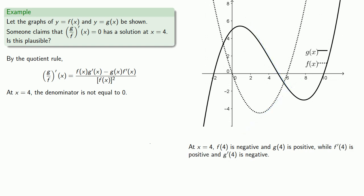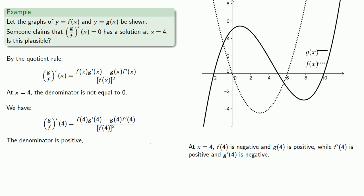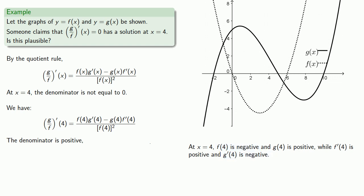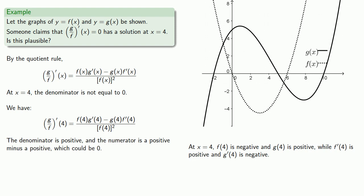Now let's consider the derivative of the quotient at x equals 4. The denominator is not equal to 0, and since it's squared, it will actually be a positive number. Meanwhile, the numerator consists of two terms: f of 4 times g prime of 4 minus g of 4 times f prime of 4. f of 4 times g prime of 4 is a negative times a negative. g of 4 times f prime of 4 is a positive times a positive. So our numerator is a positive number minus a positive number — but that could be 0. So the claim that the derivative equals 0 at x equals 4 is plausible.